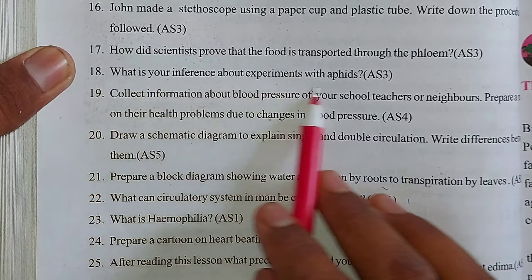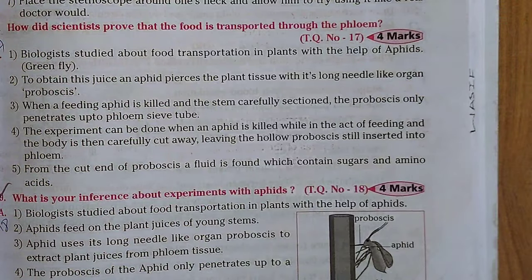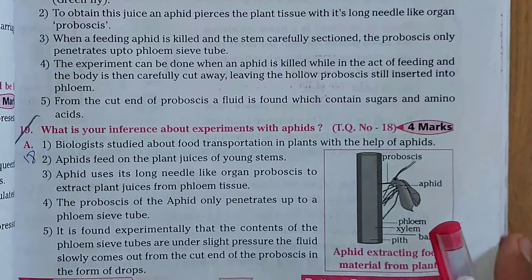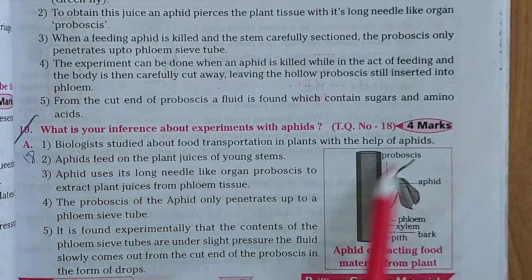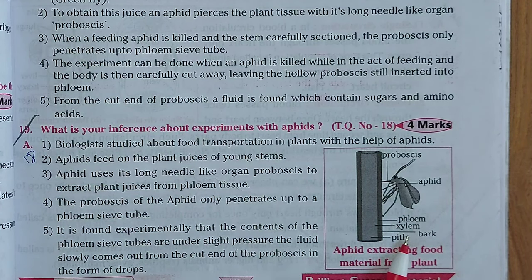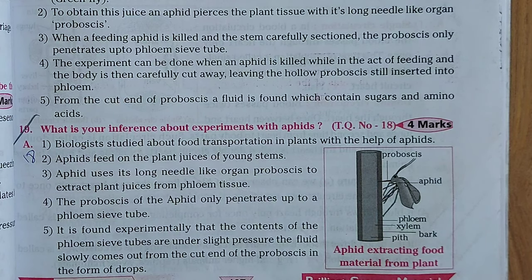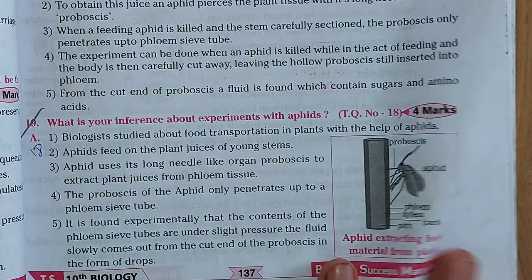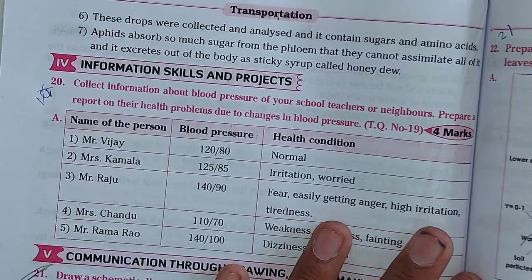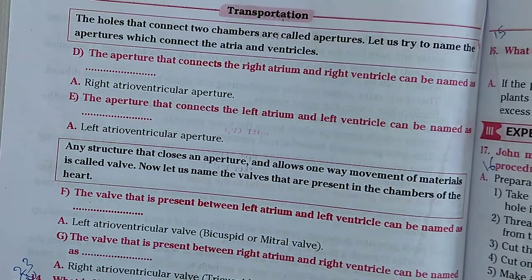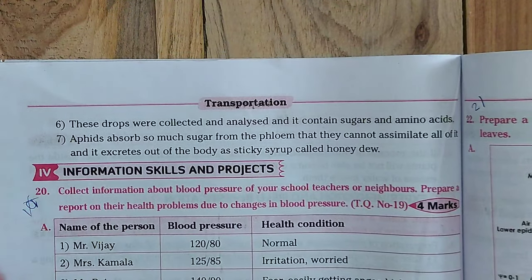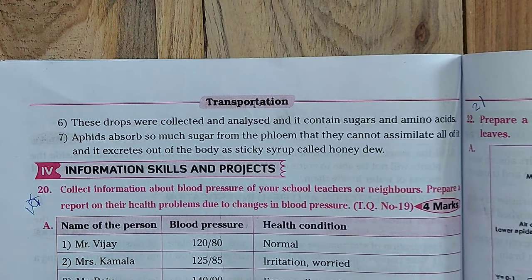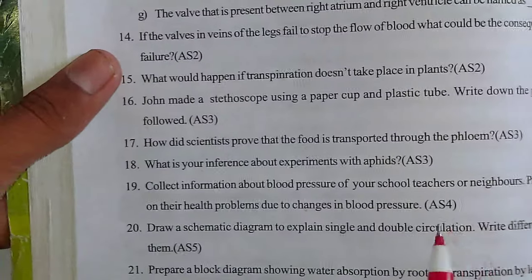Let's move to the 18th question. Guys, you can see the 18th question in the textbook. Now we will see the 18th question answer in Question Bank. You can see the 18th question and 18th question answer — we have one diagram in this question answer. This answer is continuously moving to the next page also. We have a total of seven points in this answer.